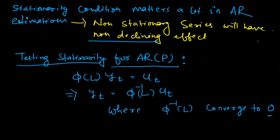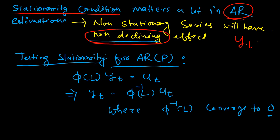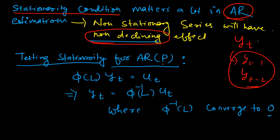One of the most important aspects of the AR model is the stationarity condition. We have talked about stationarity in another video in this series, which you can watch to understand the theory behind it and why it matters — it is very important in the AR model. One main reason stationarity is so strictly required is that if the series is non-stationary, the previous values like Yt minus 1, Yt minus 2 will have a non-declining effect on Yt, which is an undesirable property.